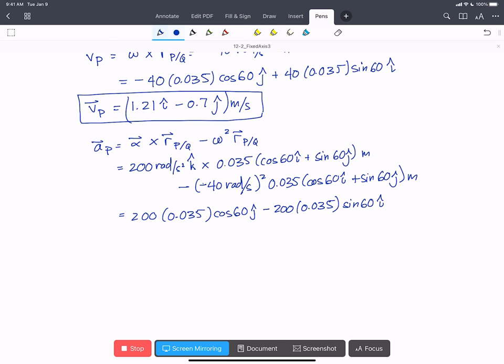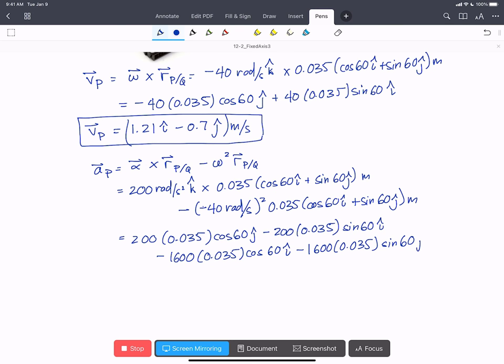And then we have minus 1600 times 0.035 times cos 60 I hat. Remember this isn't a cross so we're just using those directions. Minus 1600 times 0.035 sin 60 J hat.